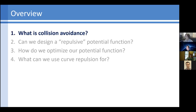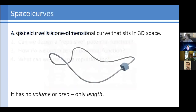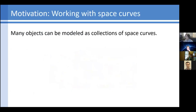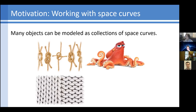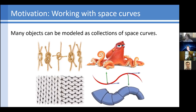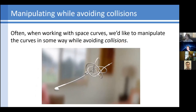Let's start by asking: what is collision avoidance? A space curve is just a one-dimensional curve that sits in 3D space — it only has length, no area or volume. In graphics, a lot of things can be modeled using space curves. These include obvious curve-like objects like ropes, threads, or textiles, as well as patterns made of many curves. Characters can also be rigged using curves, and curves are useful for engineering applications like retractable telescoping structures.